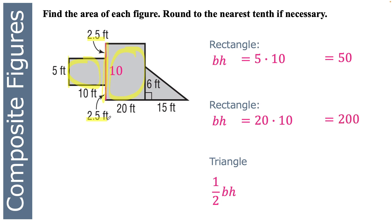And then the area of the triangle is one half base times height, one half 15 times 6, which is 45. So I've got all the little pieces, I know the area of all of those. So to find the area of the composite figure, just add them all together. 50 plus 200 plus 45 is 295 feet squared.